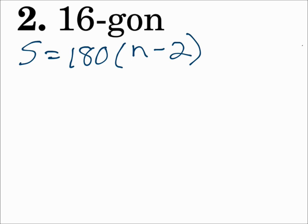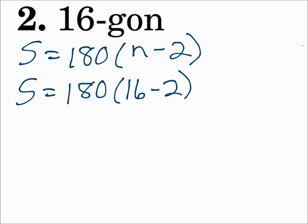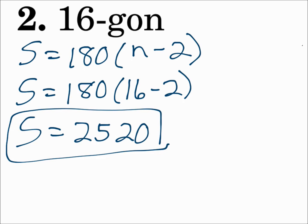Number 2, a 16-gon. S equals 180 times N minus 2. For a 16-gon, N is 16. When you work that out, you get 2,520. That's the sum of the interior angles of a 16-gon.